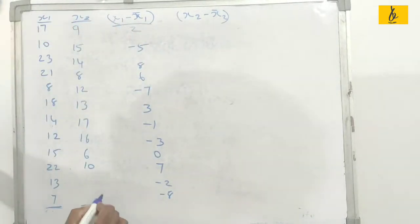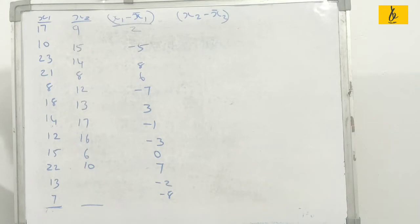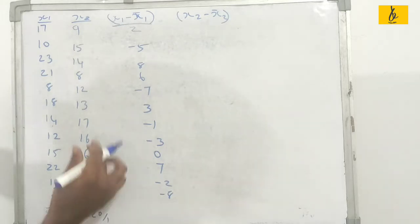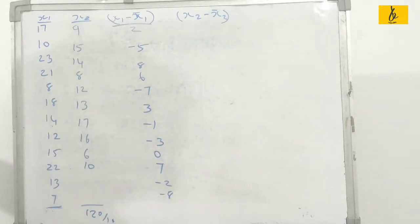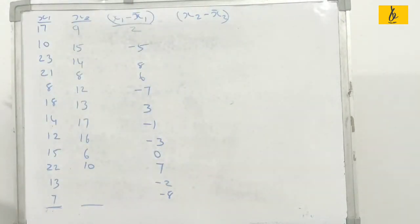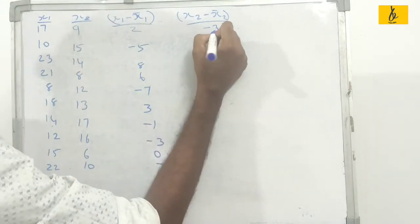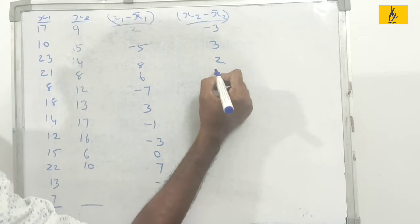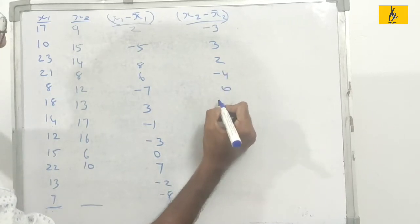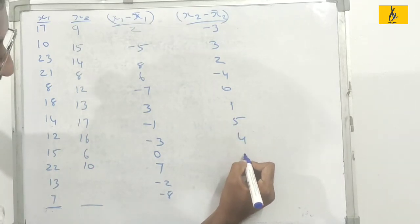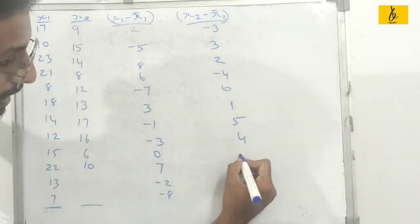For x2, x2 bar is computed: the sum of x2 values is 120 divided by 10, giving x2 bar equals 12. So the deviation x2 minus x2 bar for the first value is minus 6, and 10 minus 12 equals minus 2.